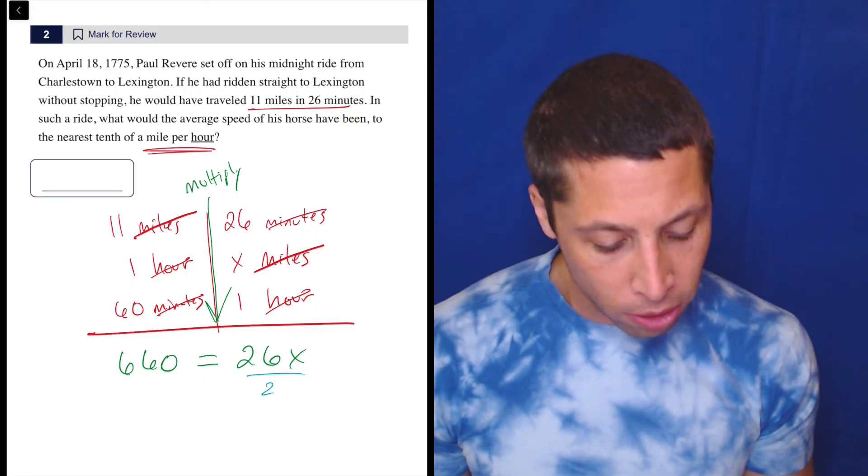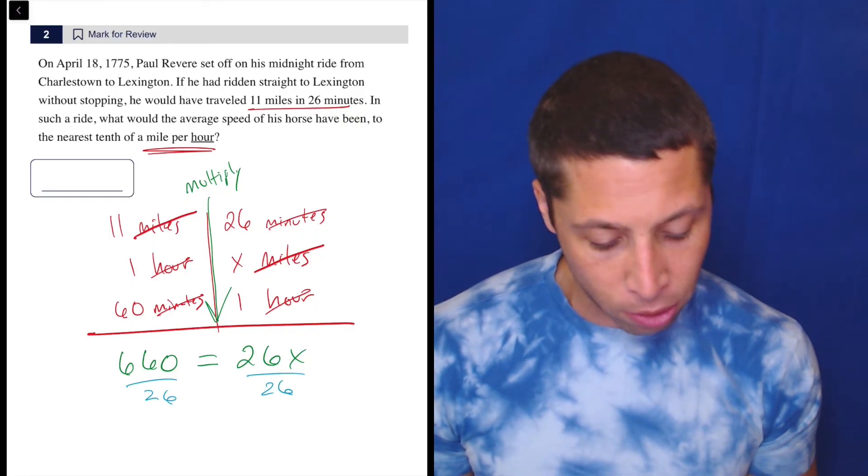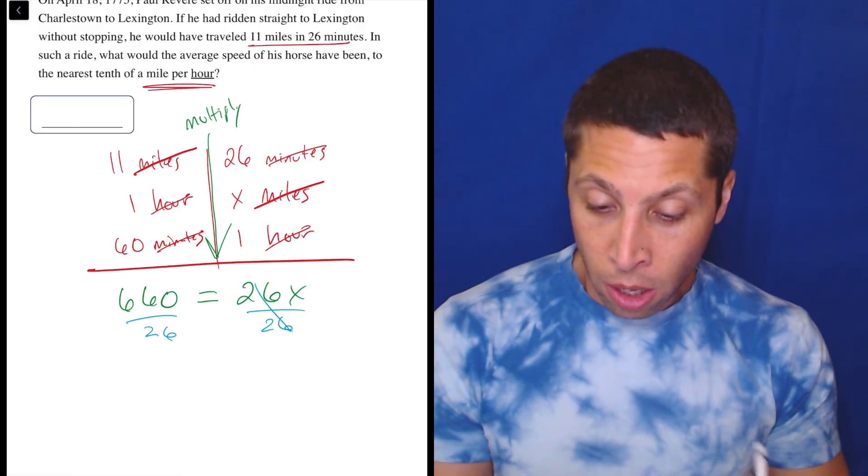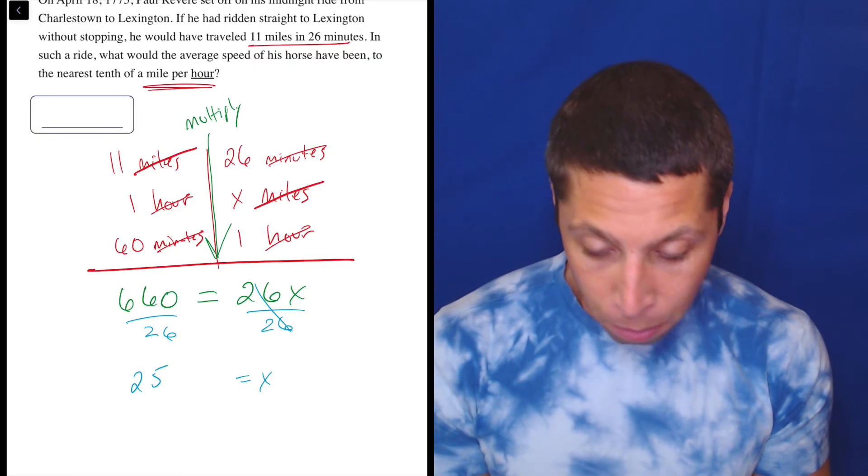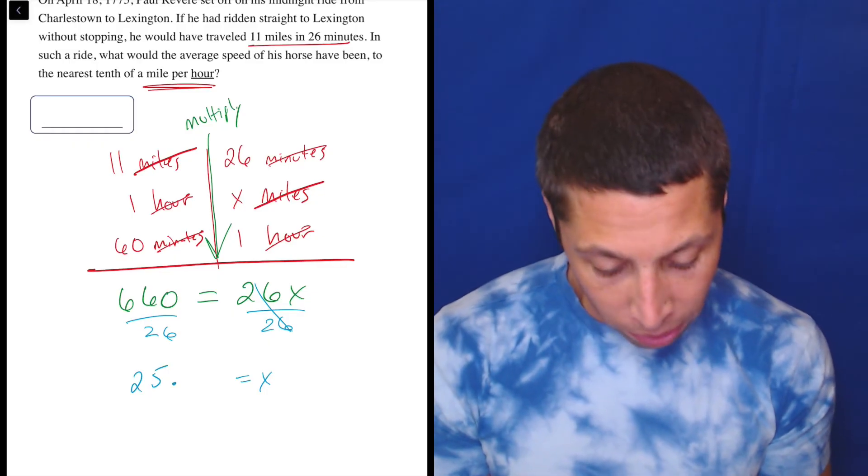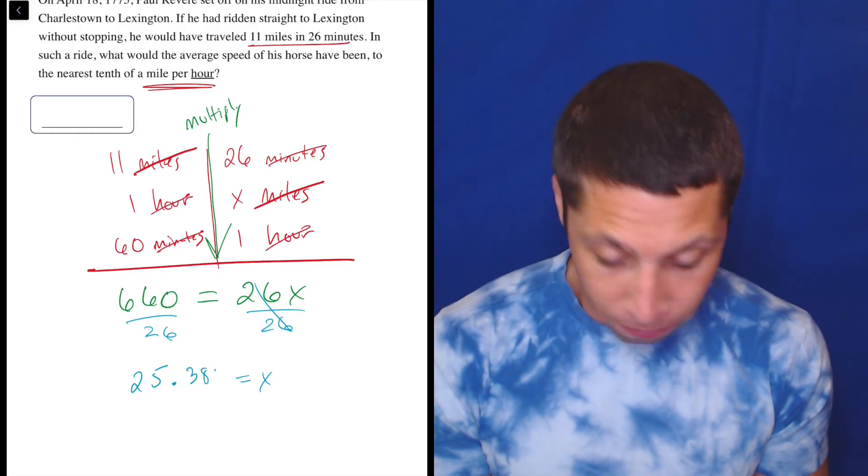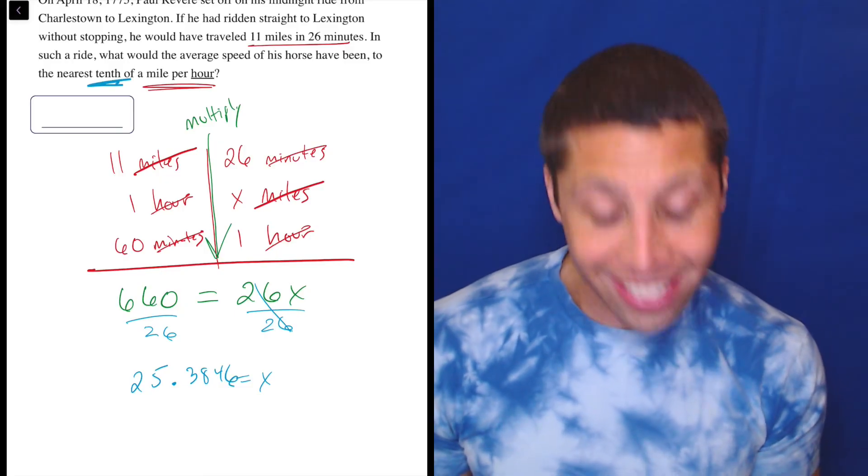And the final step is if you need to solve for X. So divide by 26, divide by 26. We get some messy number. So X equals 25 point—now let's be careful here. Well, technically it's three, eight, four, six, but they want it to the nearest tenth.